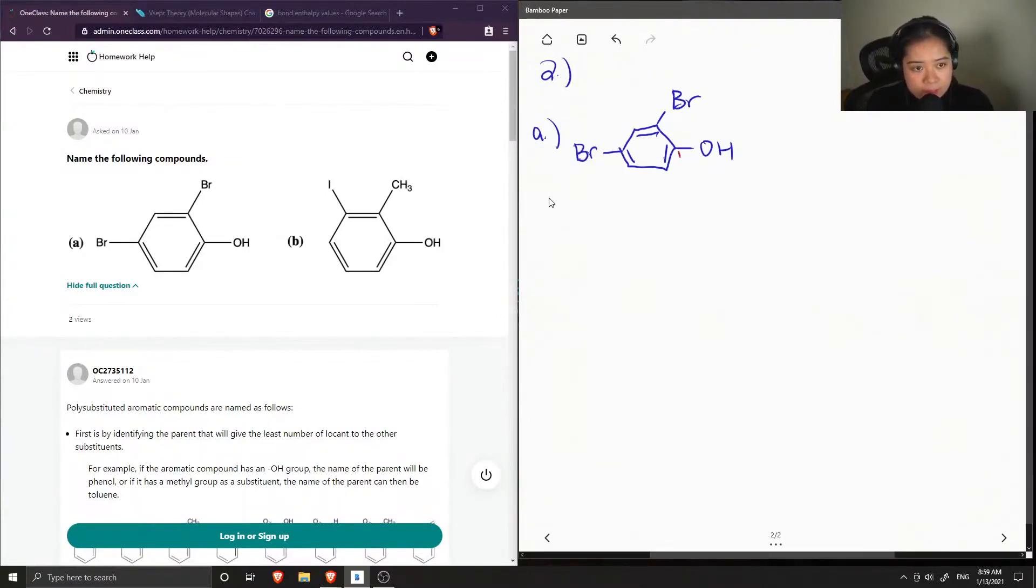So if our alcohol group is carbon 1, if we wanted the smallest amount of numbers, we're going to go counterclockwise, making this bromine on carbon 2 and the second bromine on carbon 4.